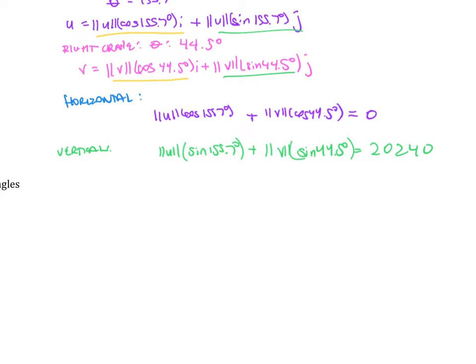If I simplify, the magnitude of U, I am going to round it to negative 0.91, and then this is plus the magnitude of V, and that is 0.71, and that equals zero. Then for the vertical, that is going to be the magnitude of U times 0.41 plus the magnitude of V times 0.7, and that equals 20,240.